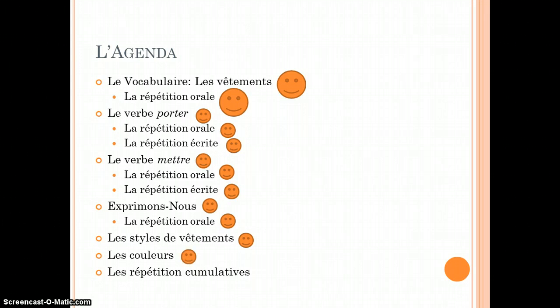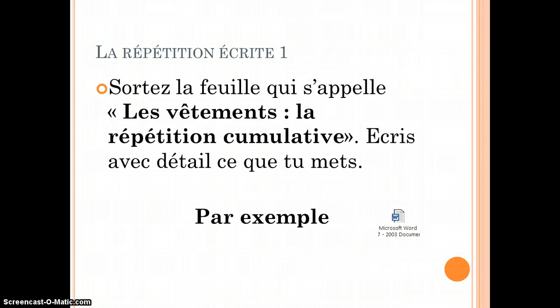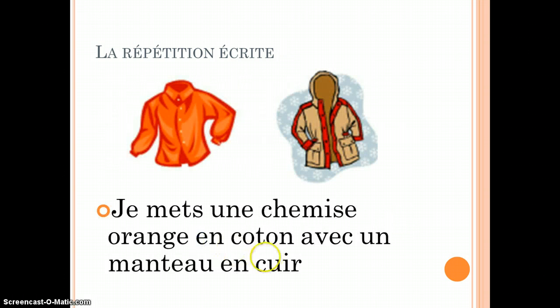Now let's transition into applying what we've learned. In the document that says les vêtements, la répétition cumulative, we're going to describe what type of clothing you're wearing by starting off your sentence with either je porte ou je mets and then identifying the object and its style and color. For example, je mets une chemise orange en coton avec un manteau en cuir. You'll notice that I made up the fabric and that's okay as long as it makes sense.